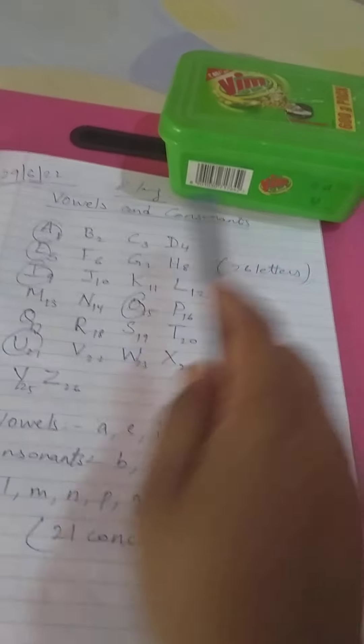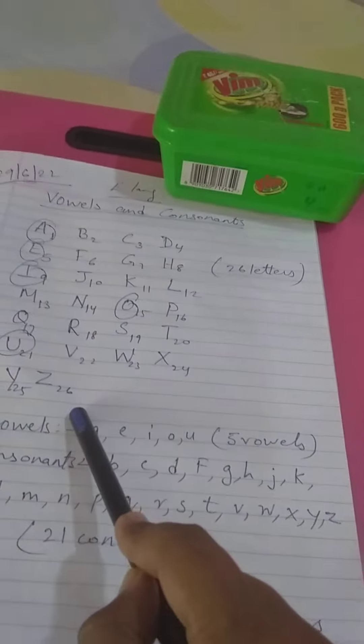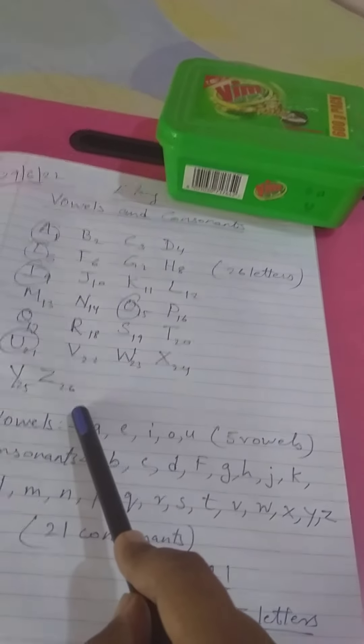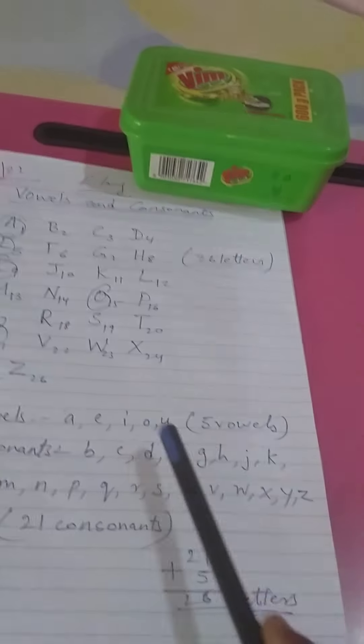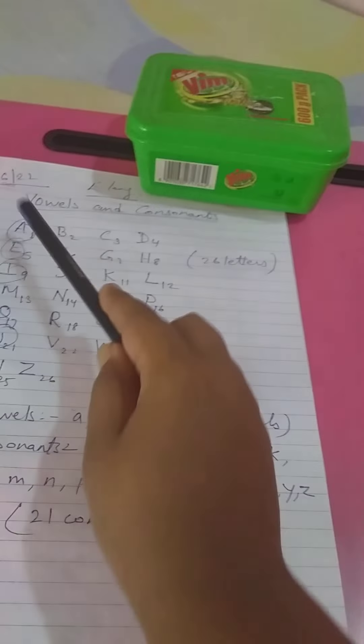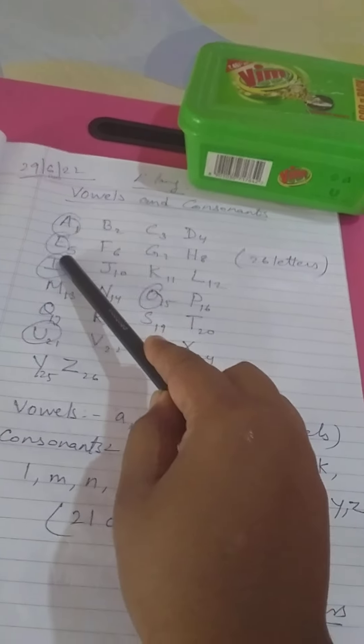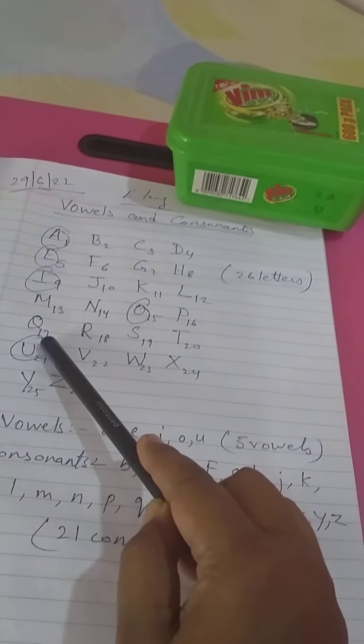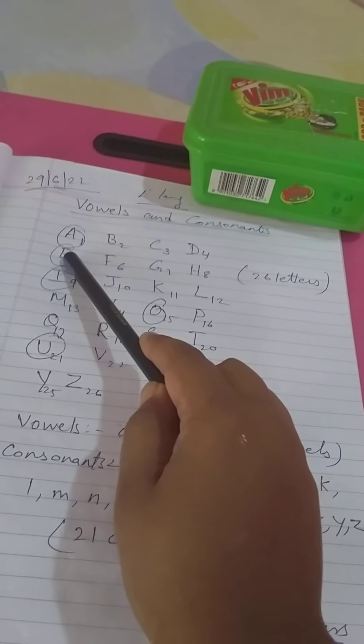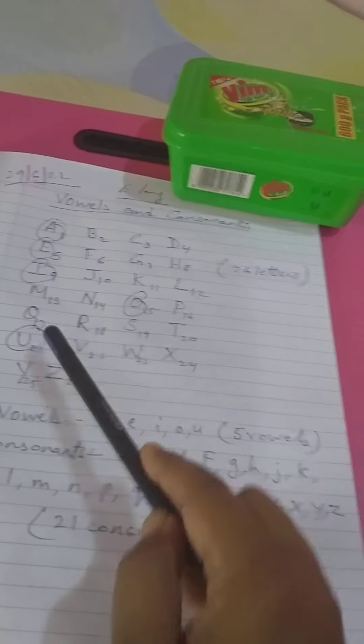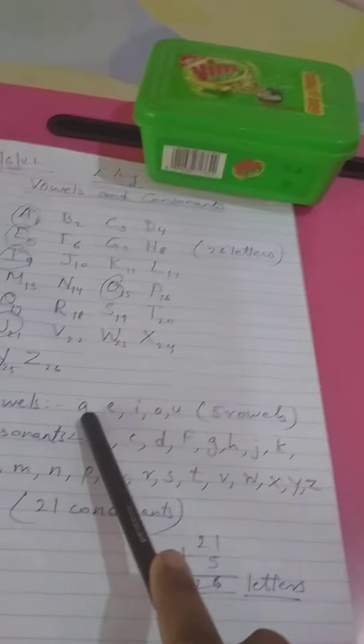How many vowels are there? There are five vowels: A, E, I, O, and U. I repeat once more: A, E, I, O, U. There are five vowels.